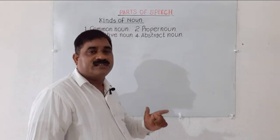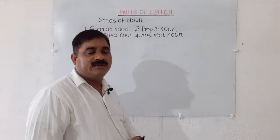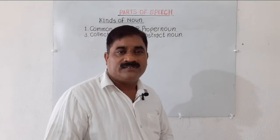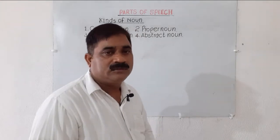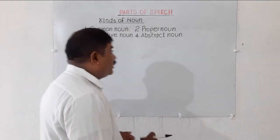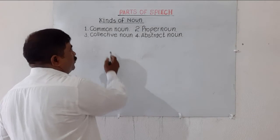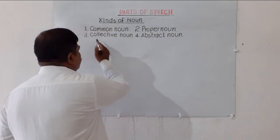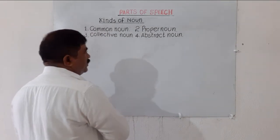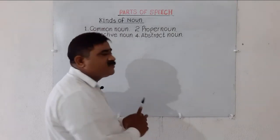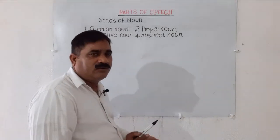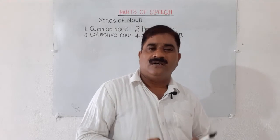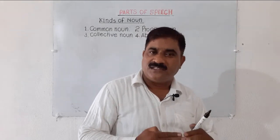We are going to discuss kinds of noun. There are four kinds of noun and they are: common noun, proper noun, collective noun, and number four, abstract noun. So we are going to discuss these nouns in detail.